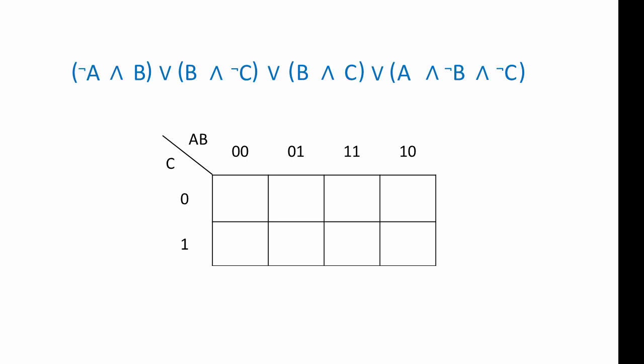We're going to need a Karnaugh map with three variables, because there are three variables in the expression. We're going to take each group of variables that have been ANDed together and deal with them separately, beginning with NOT A AND B.